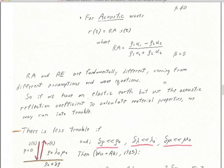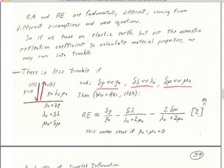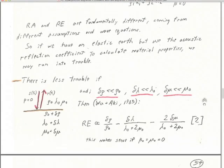The acoustic and the elastic reflection coefficients are fundamentally different, even though they're both fairly simple at normal incidence only. They come from different assumptions, different wave equations, different boundary conditions on integrating across the boundary. That's why they're so different.